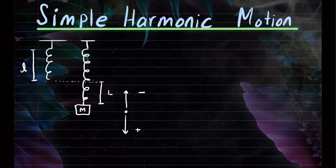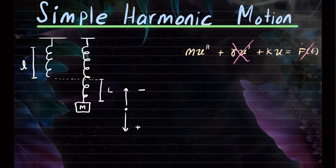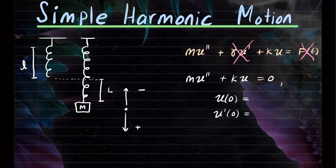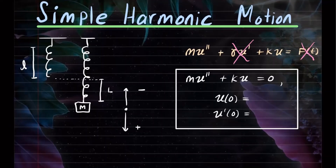We have the gravitational force pulling it downward and the spring force pulling the mass upward. We're going to use the differential equation: M·U'' + γ·U' + K·U = external force. Since we're assuming only free oscillation — no damping — those terms are zero, and no external force is applied. So our differential equation comes down to M·U'' + K·U = 0. We'll have initial conditions U(0), the initial position, and U'(0), the initial velocity.